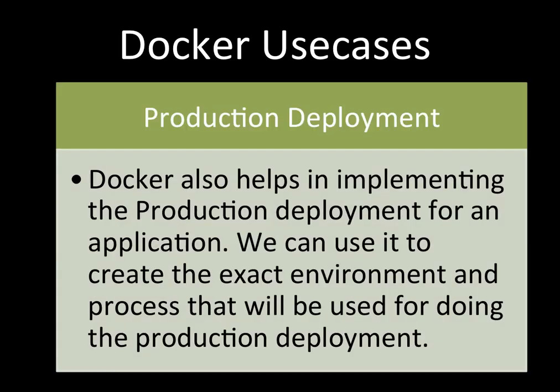The third use case is production deployment. We can implement deployment of our application to production using Docker. We create exactly the same environment in Docker that will be running in production, then set up a deployment process. Whatever way we deploy locally, the same exact process runs and deploys to production. Life becomes much easier and very predictable because all deployment instructions are in one specific Dockerfile — so there are no surprises.